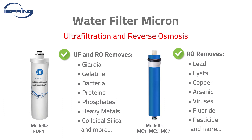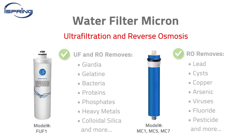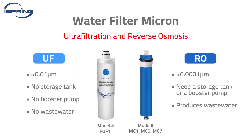Such as proteins, gelatin, virus, and heavy metals. An ultrafiltration membrane can filter the water down to around 0.01 or 1 one-hundredth of a micron and does not require a booster pump or a water storage tank.